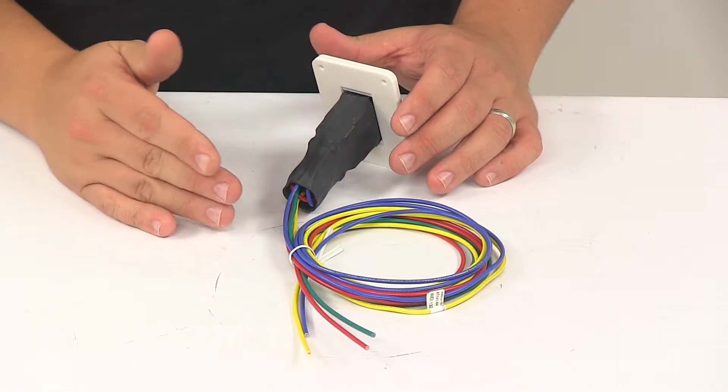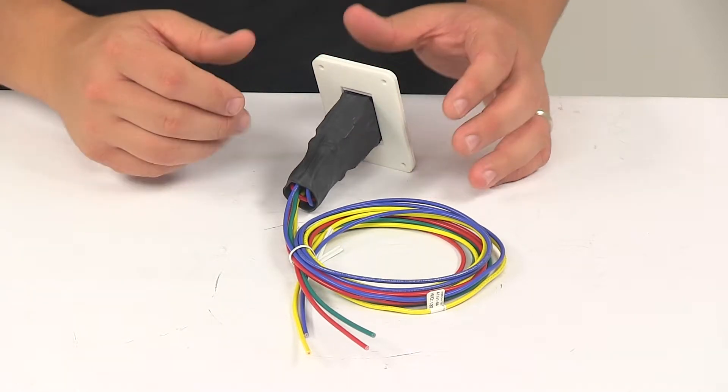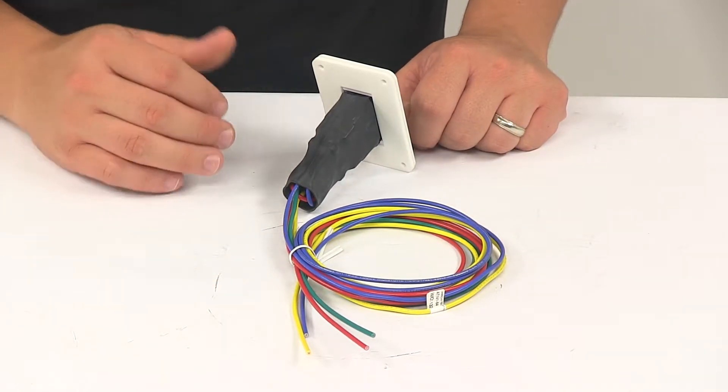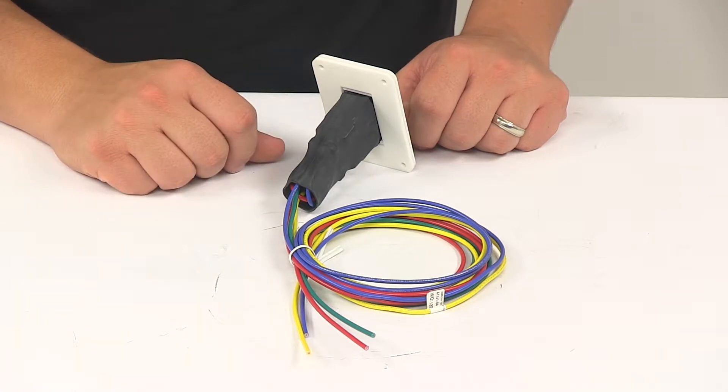When you're doing the replacement, pay attention to which wire goes to which location because this is an exact replacement and will connect the exact same way as the original control switch did.